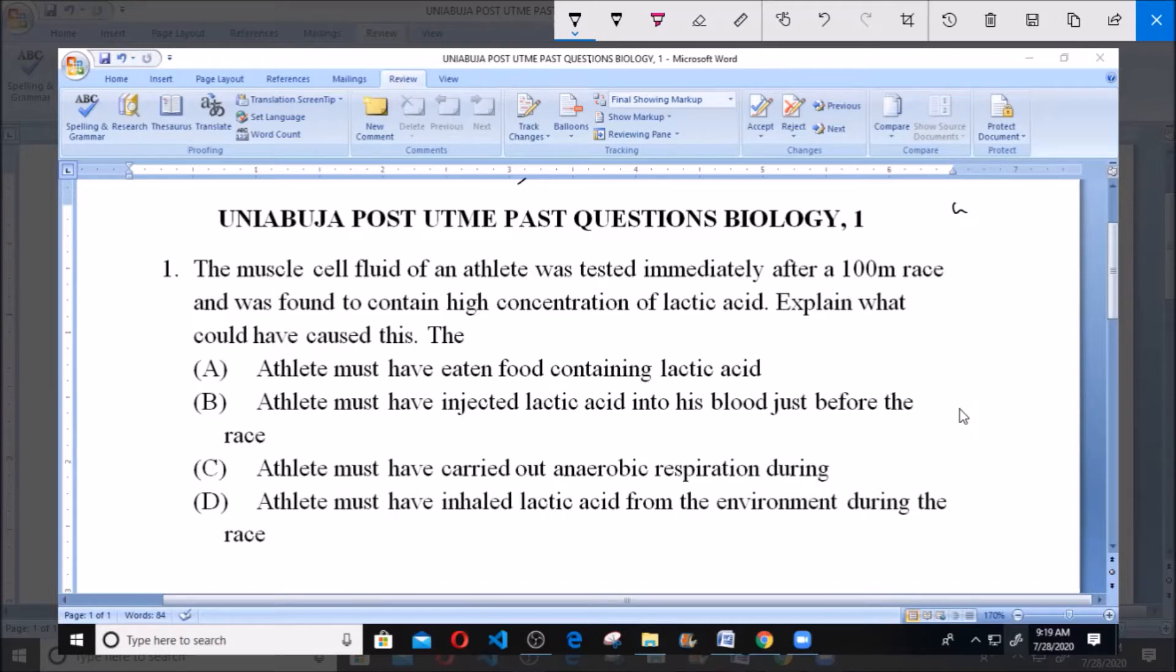Option A: The athlete must have eaten food containing lactic acid. B: The athlete must have injected lactic acid into his blood just before the race. C: The athlete must have carried out anaerobic respiration during the race. And D: The athlete must have inhaled lactic acid from the environment during the race.